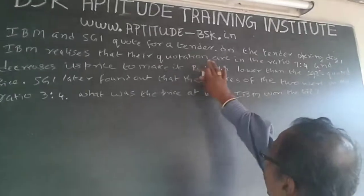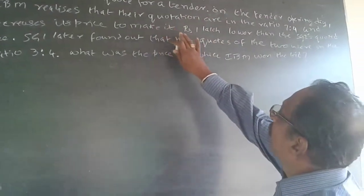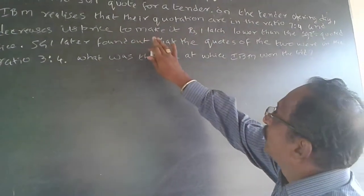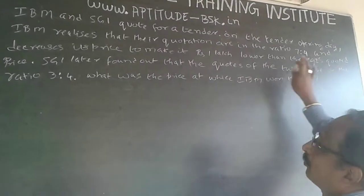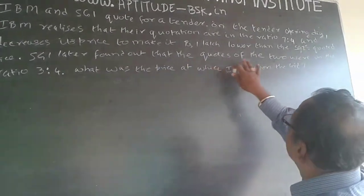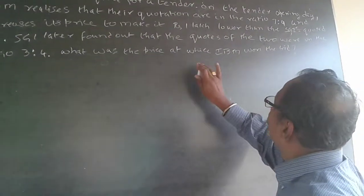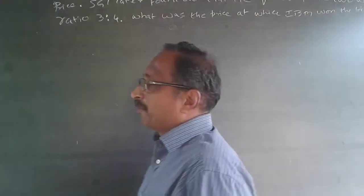IBM and SGA quote for a tender. On the tender opening day, IBM realizes that the quotations are in the ratio 7 to 4 and decreases its price to make it Rs. 1 lakh lower than the SGA quoted price. SGA later found out that the quotations of the two were in the ratio 3 to 4. What was the price at which IBM won the bid?